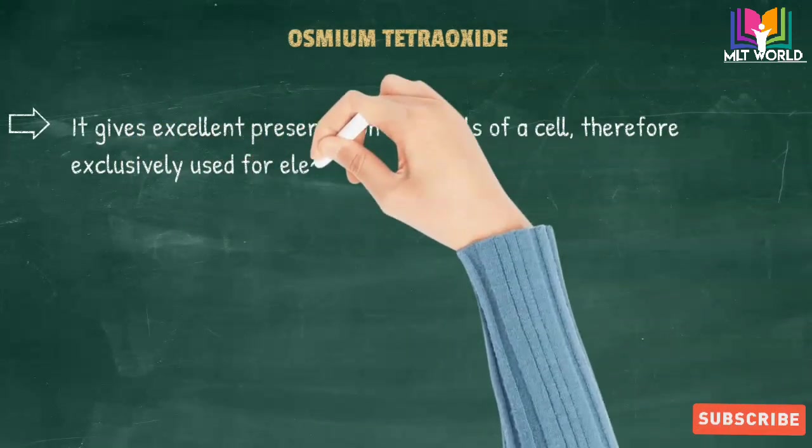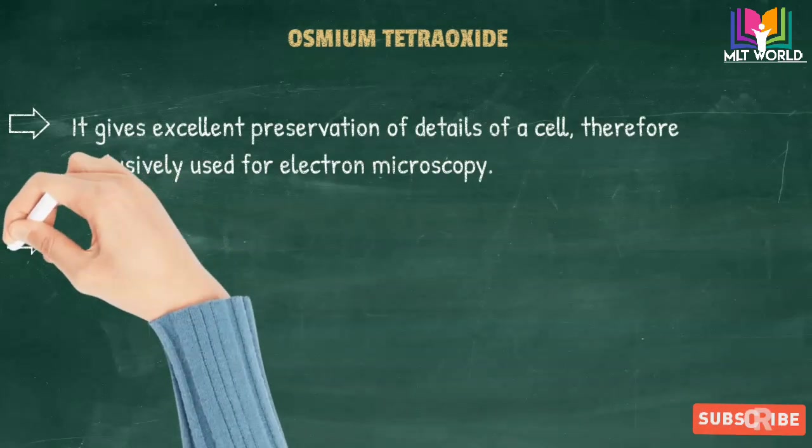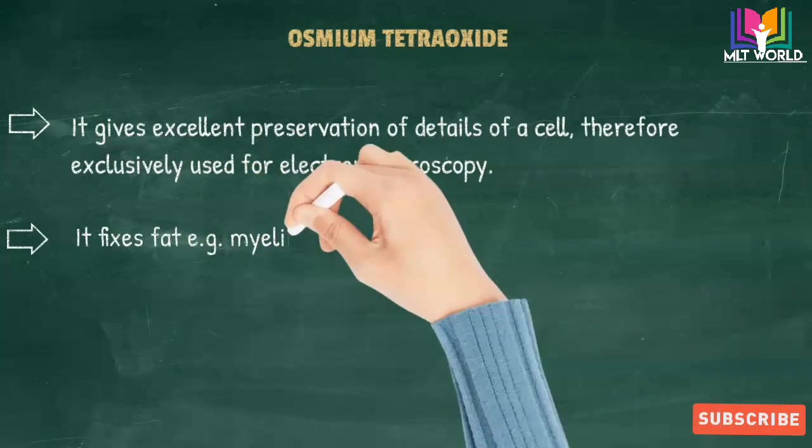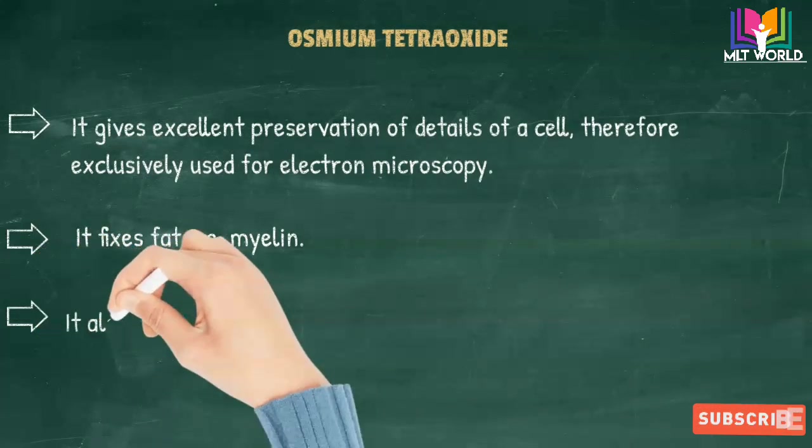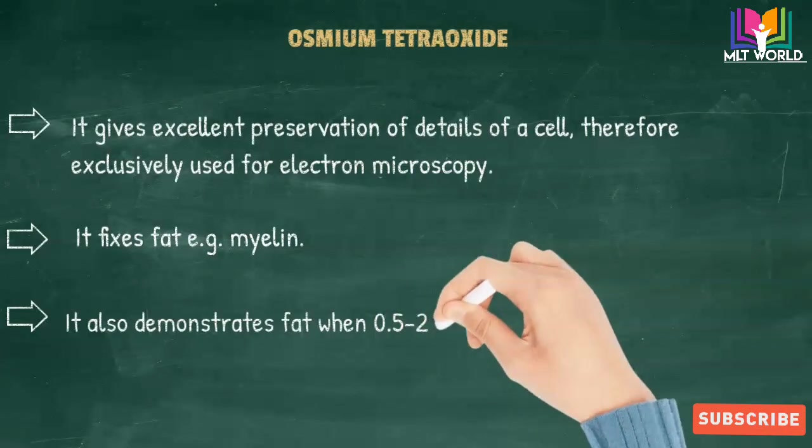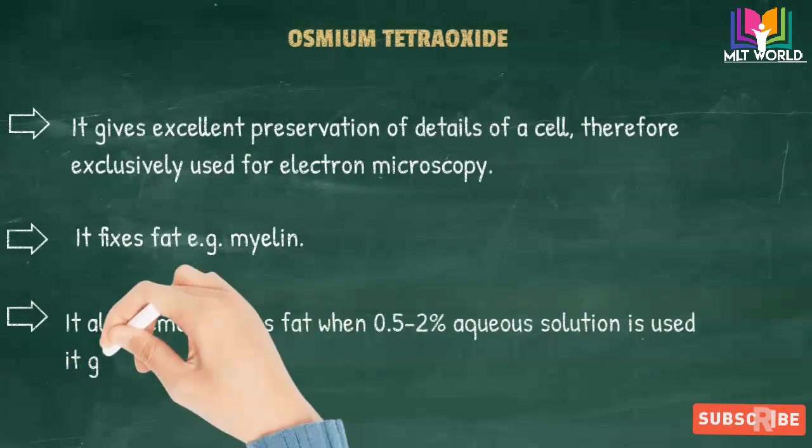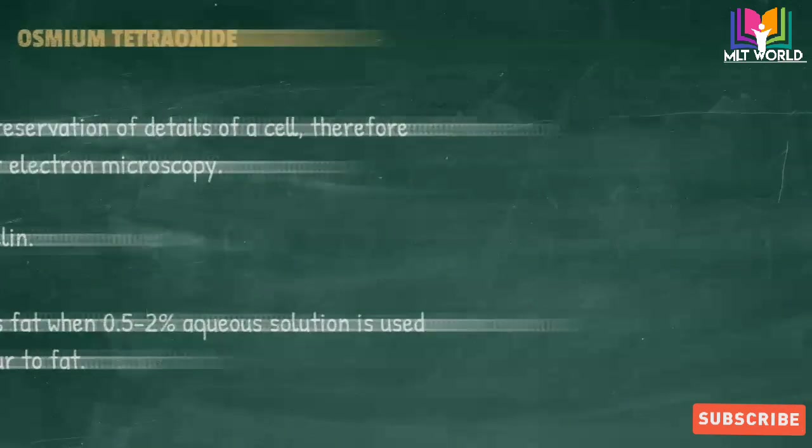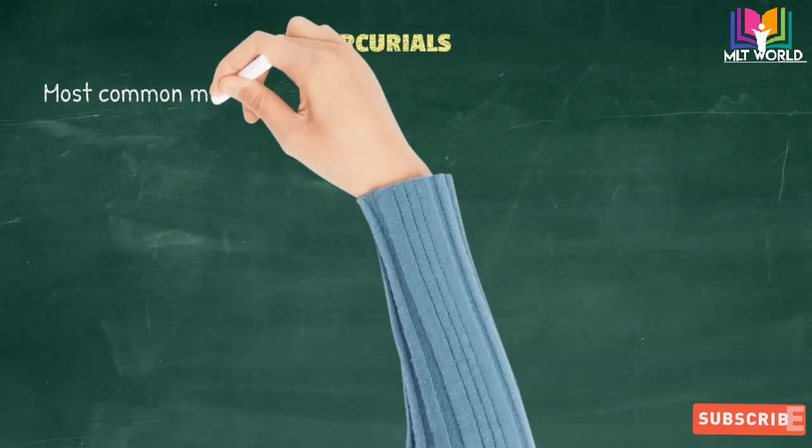Osmium tetroxide fixes fat, for example myelin. It also demonstrates fat when 0.5 to 2 percent aqueous solution is used and gives a black color to fat. This is a disadvantage of osmium tetroxide.